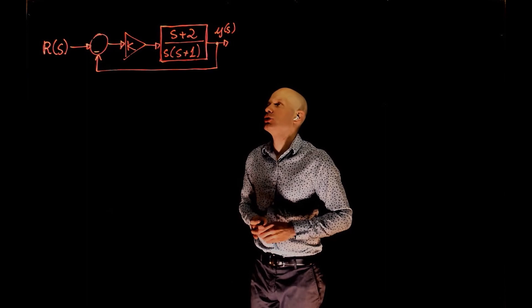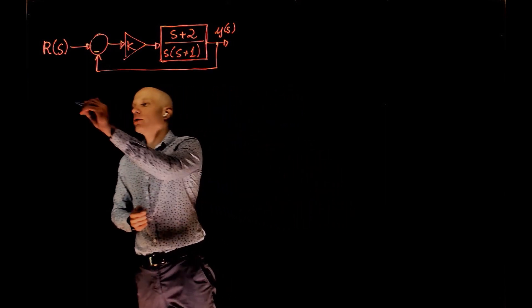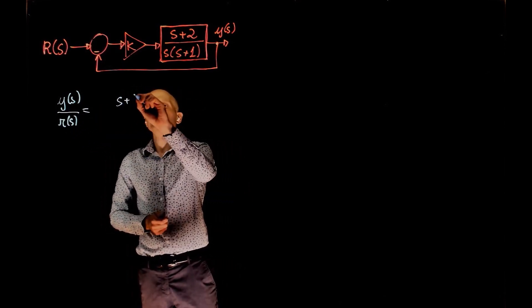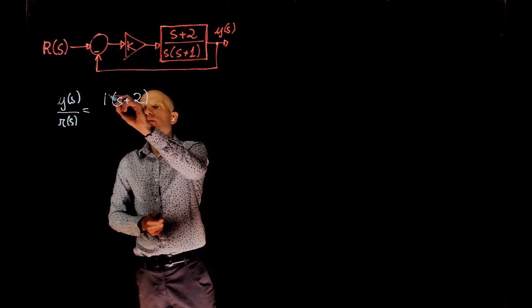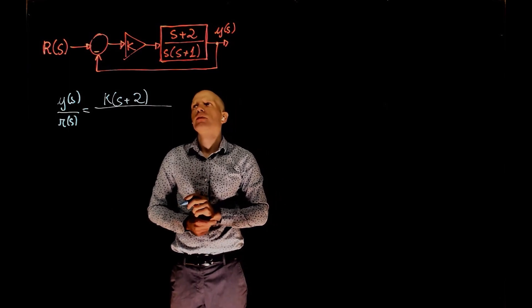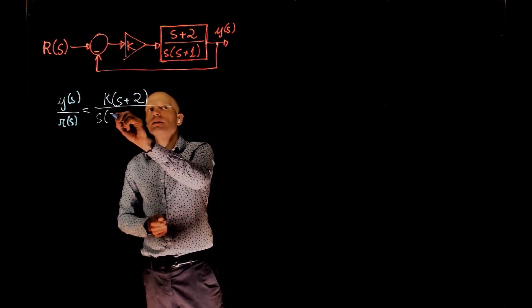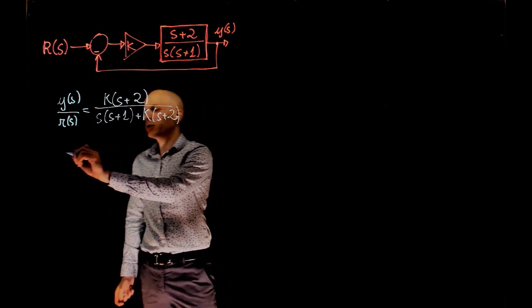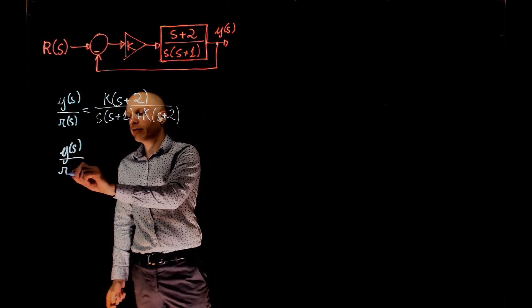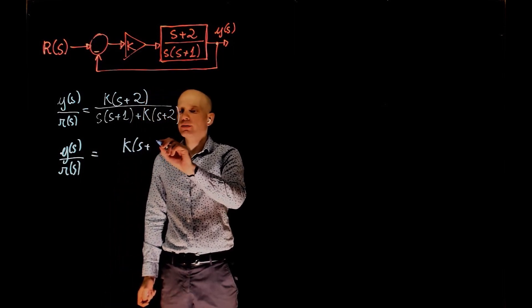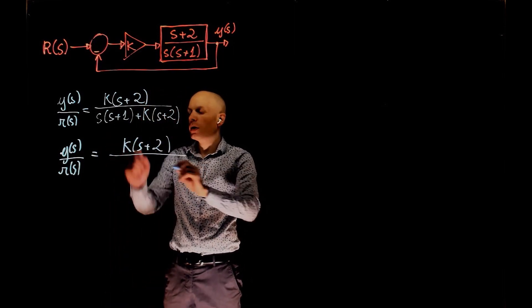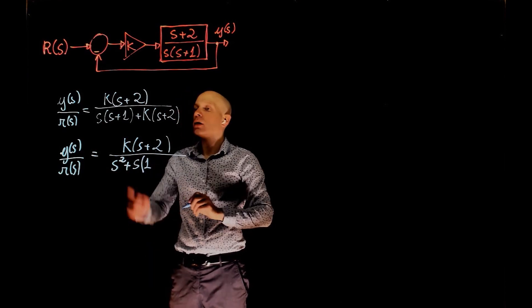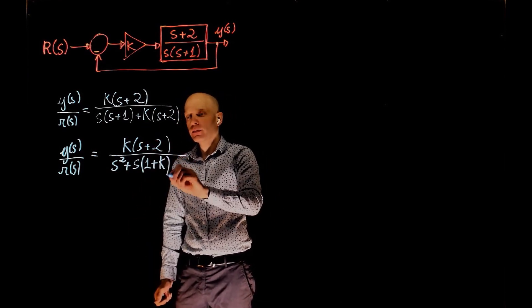First, we need to find the transfer function y over r. In this case, y over r is simply (s + 2)k divided by s times (s + 1) plus k times (s + 2). We can now simplify this expression — factoring out all s terms — so we have ks + 2k in the numerator, divided by s² + s(1 + k) + 2k.